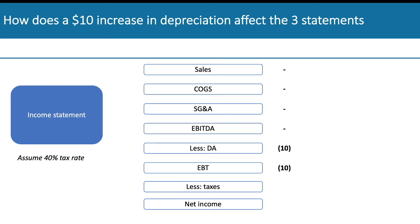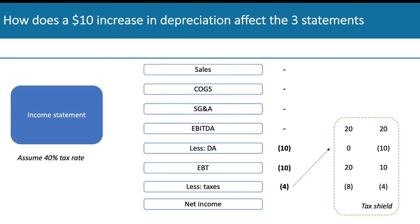Now, with the taxes — this is a little tricky. If you assume a 40% tax rate, the depreciation is going to reduce the taxes by 4. To think about this: assume EBITDA of 20 with zero depreciation — earnings before taxes would also be 20, and taxes would be 8. Now if depreciation goes up to 10, you'd have EBITDA of 20, depreciation of 10, and earnings before taxes of 10. The depreciation lowered the taxable income, so you'd only pay 4 in taxes. This impact — where depreciation reduces taxable income — is called the depreciation tax shield, and it's what leads to the lowered tax payments.